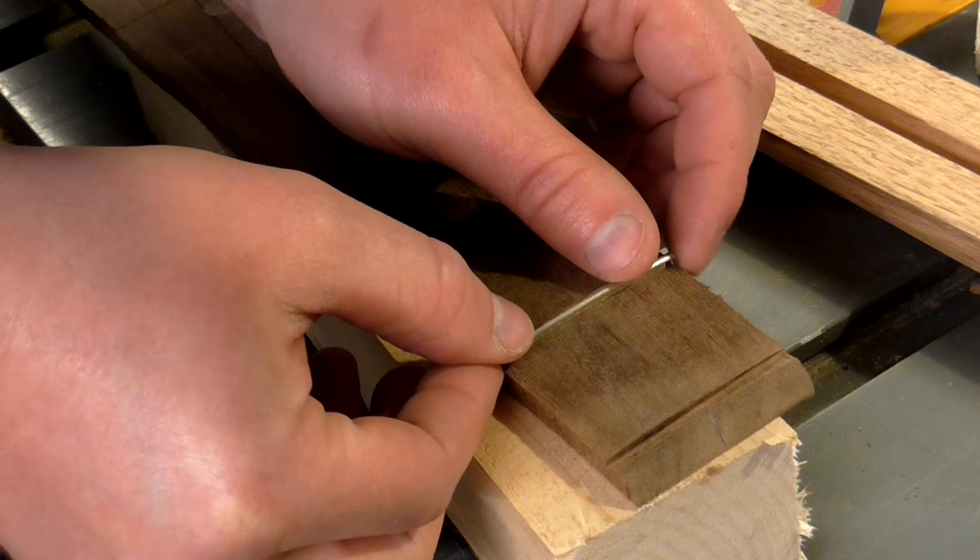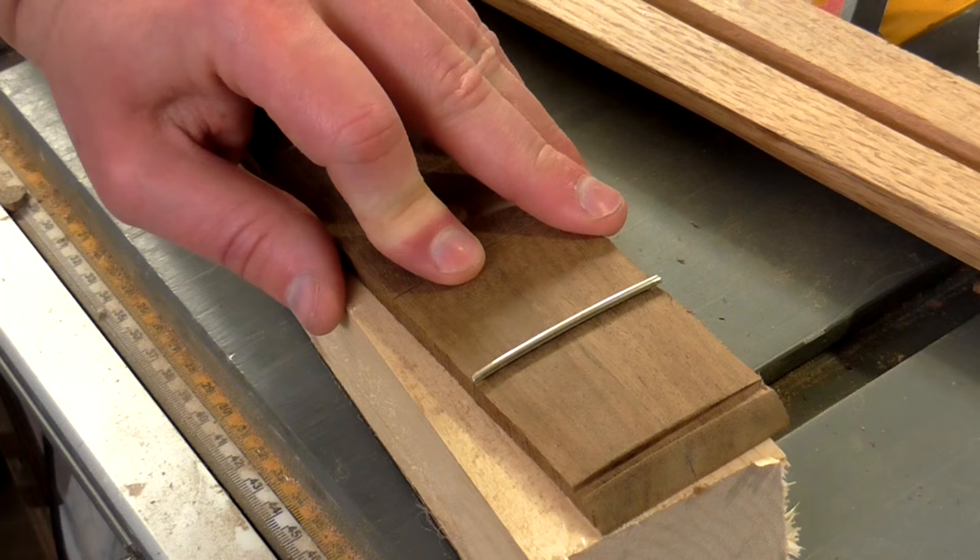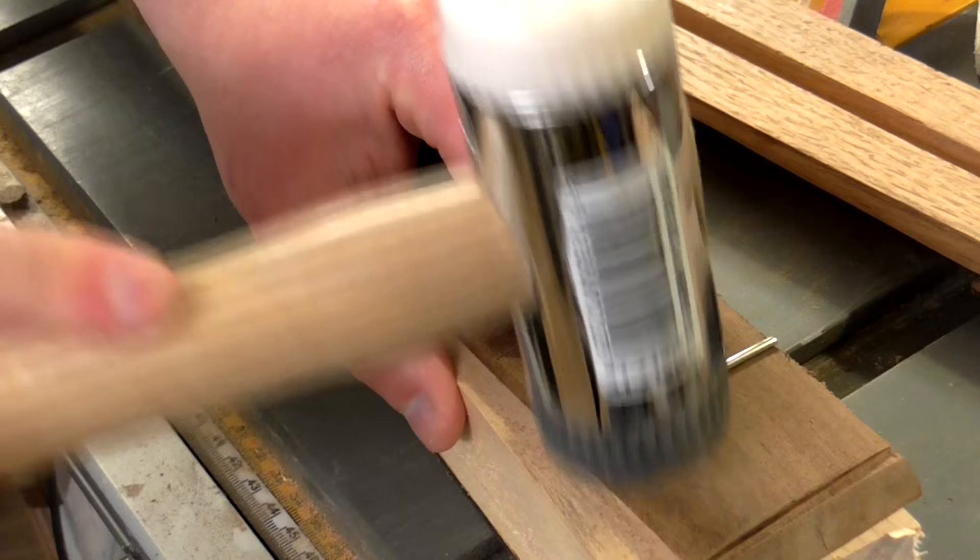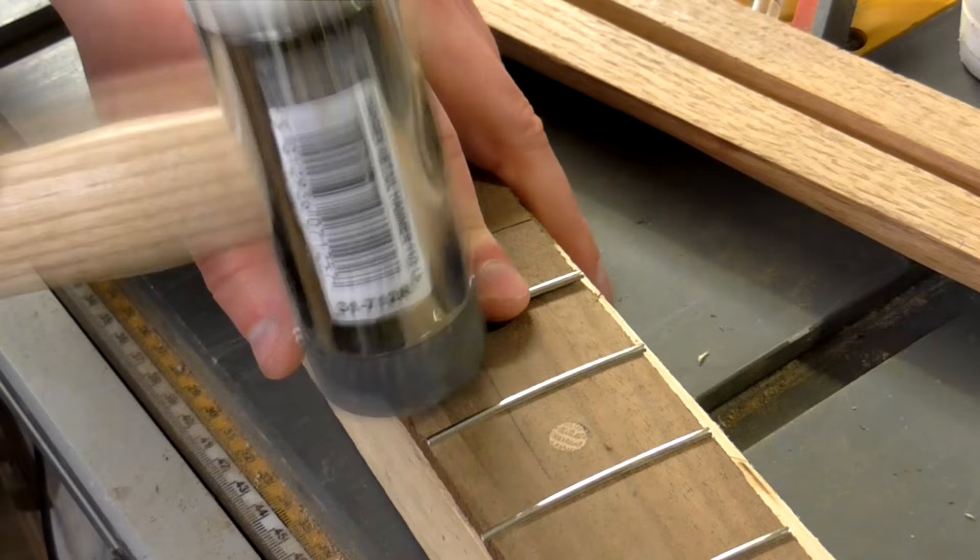Then I could install the fret wire using a mallet to seat it into the slots. Each piece of fret wire was a different length because the fretboard is tapered so I had to sort them all into size order before fitting them which was surprisingly difficult and quite time consuming.